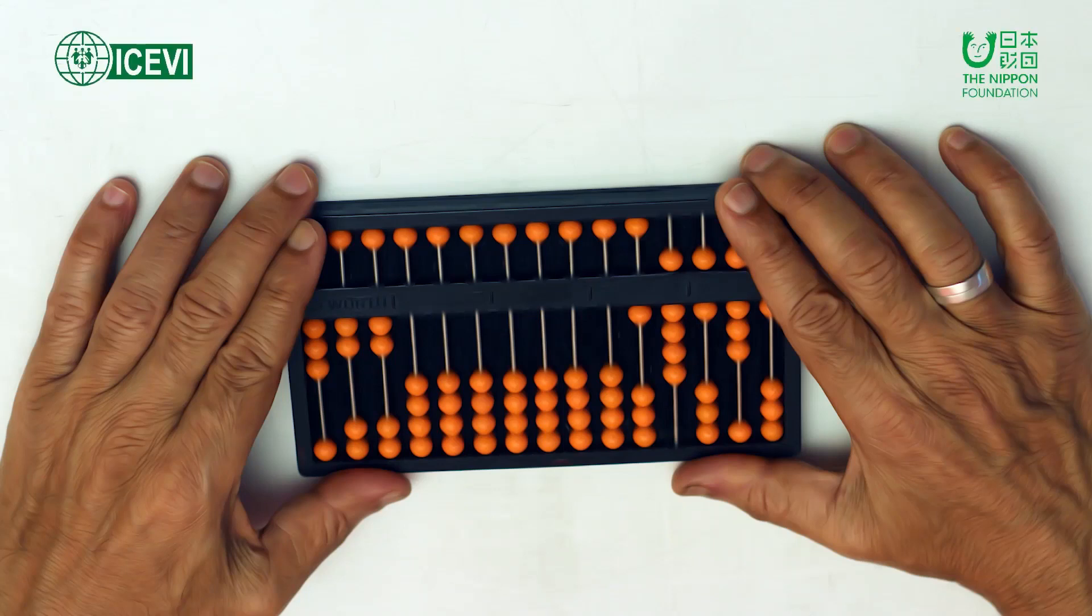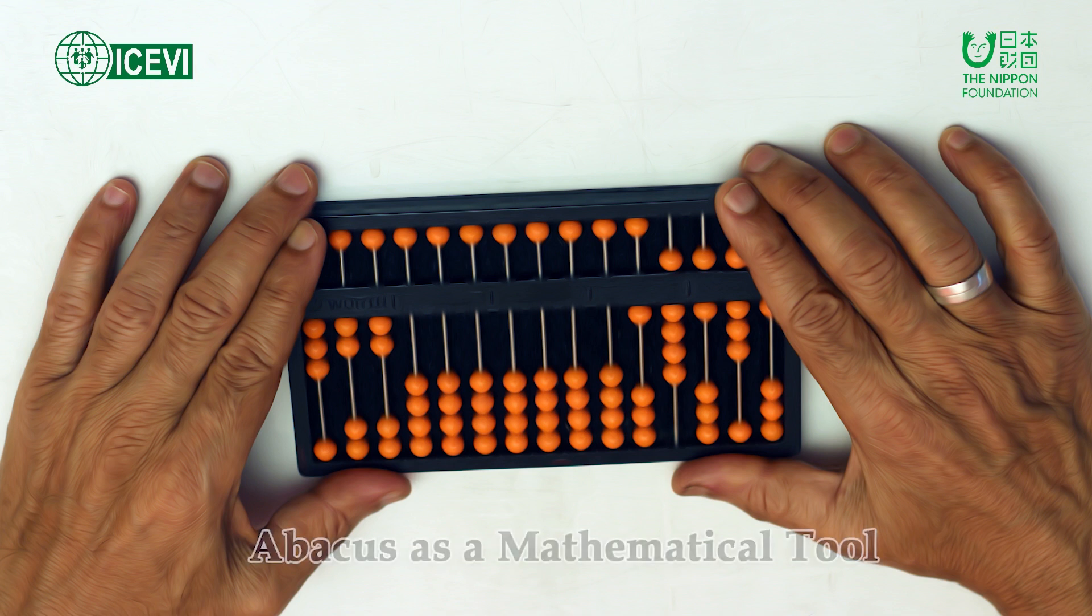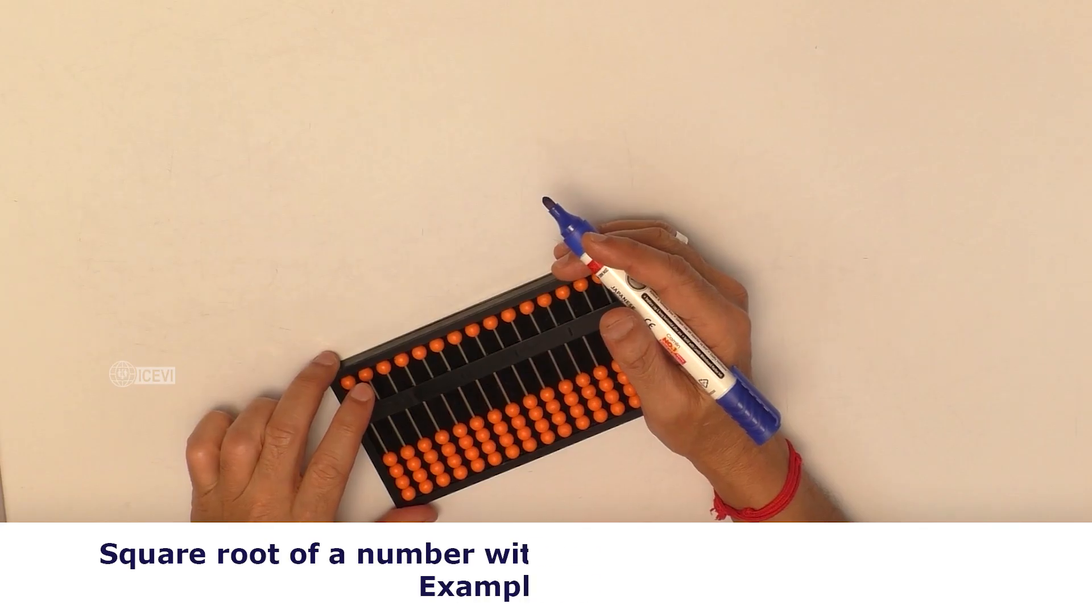The I.C.E.V.I. and The Nippon Foundation Mathematics Package for Teachers Video Series: Abacus as a Mathematical Tool. Title of the video: Square Root of a Number with 10 as the Lowest Digit.